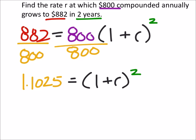Is everyone okay there? So 882 divided by 800 is 1.1025. So this hopefully looks a lot more familiar now. We're just going to square root both sides of this thing, so I got the absolute value of one plus the rate.